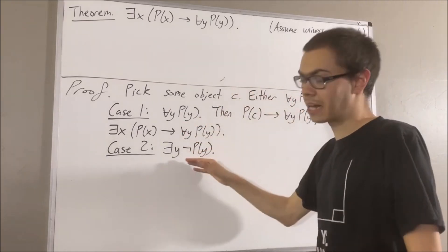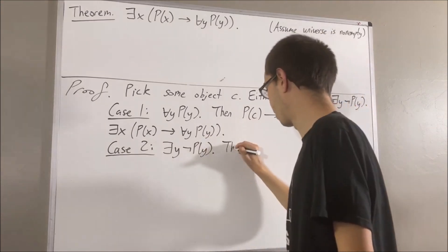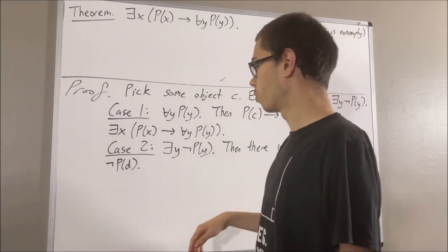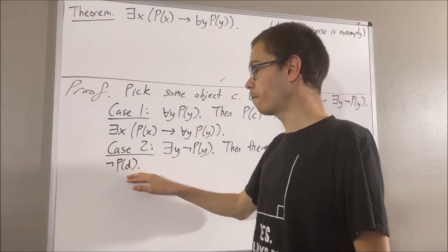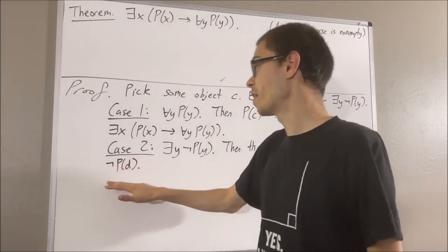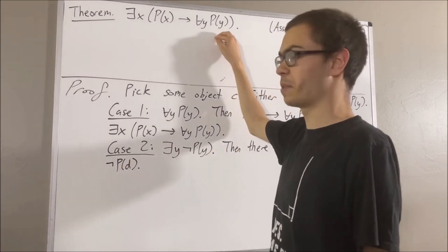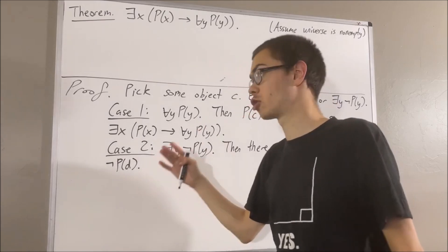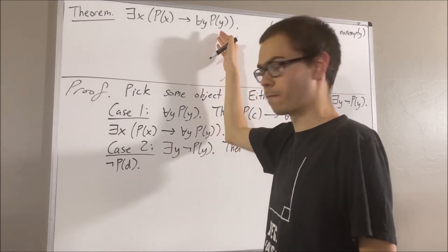So, we have that not P of D is true. Well, since not P of D is true, it follows that if it's false, then for all Y, P of Y. In other words, if P of D is true, then for all Y, P of Y.